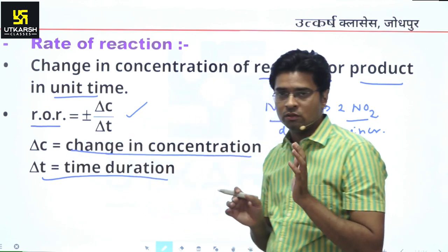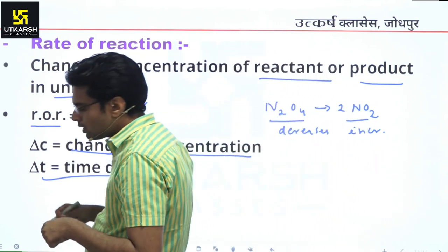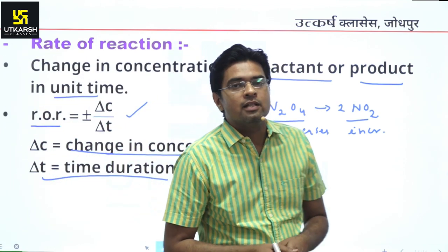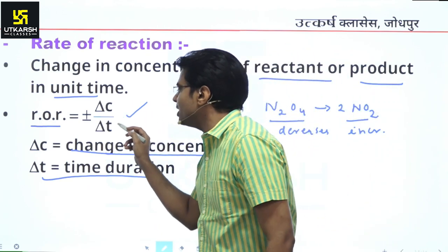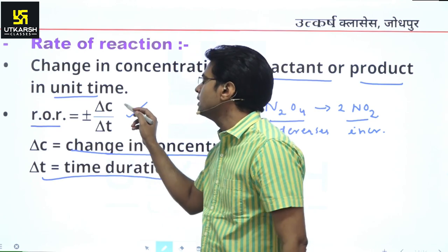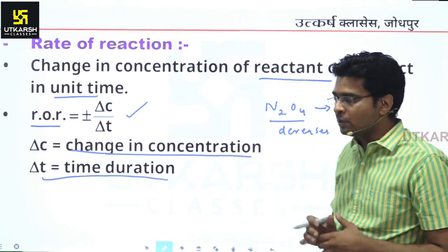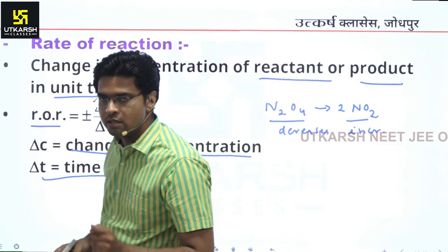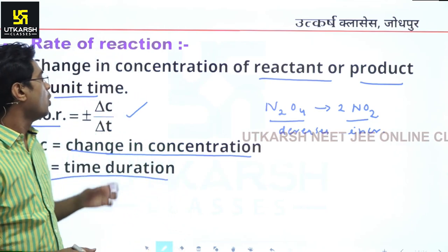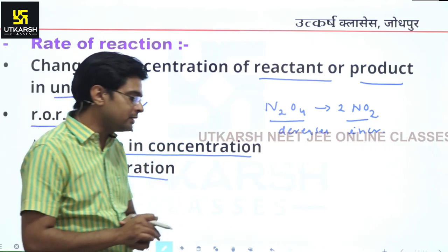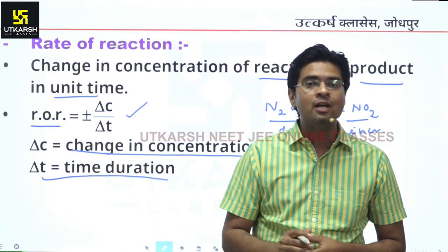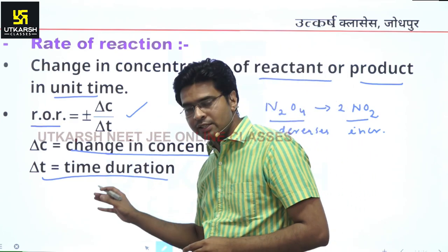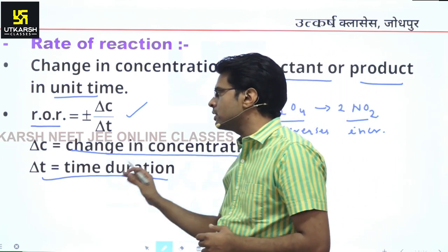For example, just as when you are driving a car or a bike, you determine speed as distance travelled divided by time interval — in the case of a reaction, it is the change in concentration divided by the time interval. So: rate of reaction is the change in concentration of reactant or product in a unit time, expressed as ±ΔC/ΔT, where delta represents change, C represents concentration, and T represents time.